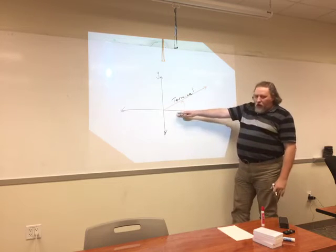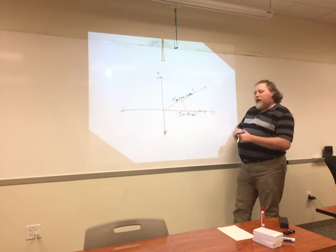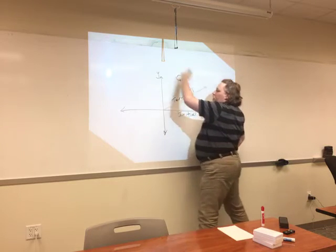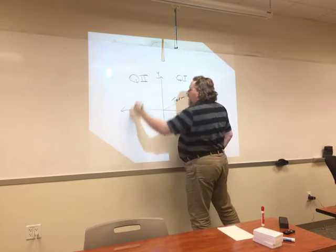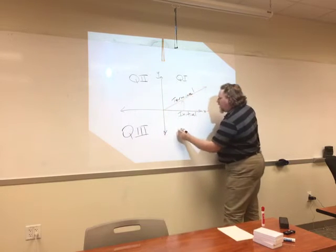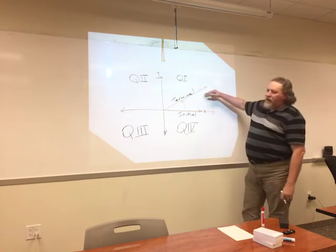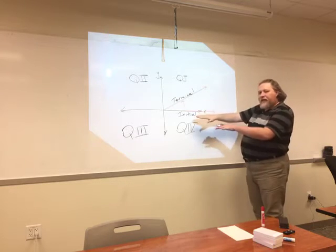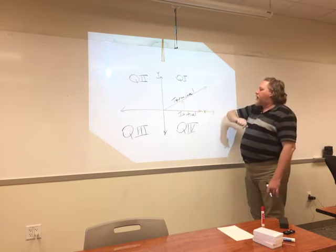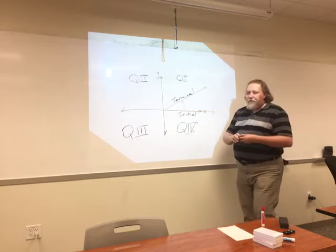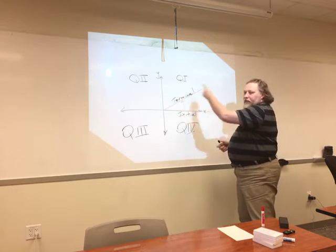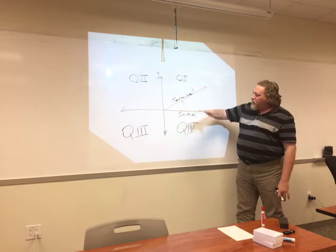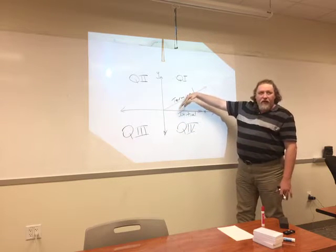The initial side is always on the positive x-axis; wherever the terminal side ends up, so be it. Remember from algebra, these quadrants have names: quadrant one (anti-clockwise), quadrant two, quadrant three, and quadrant four. This angle is a quadrant one angle because that's where the terminal side ends up. Positive angles go anti-clockwise, negative angles go clockwise, and the initial side is always on the right-hand x-axis.